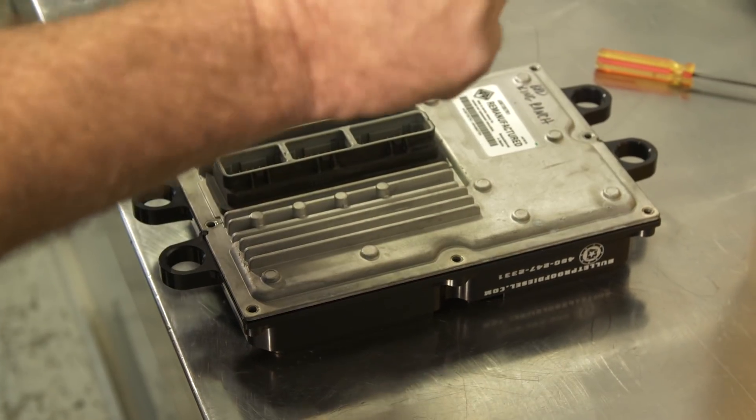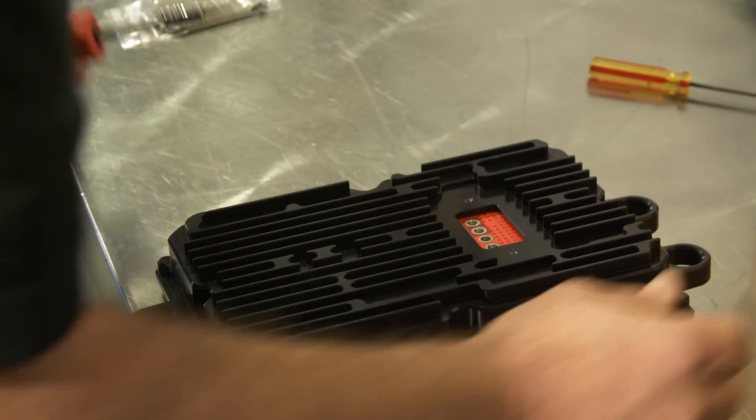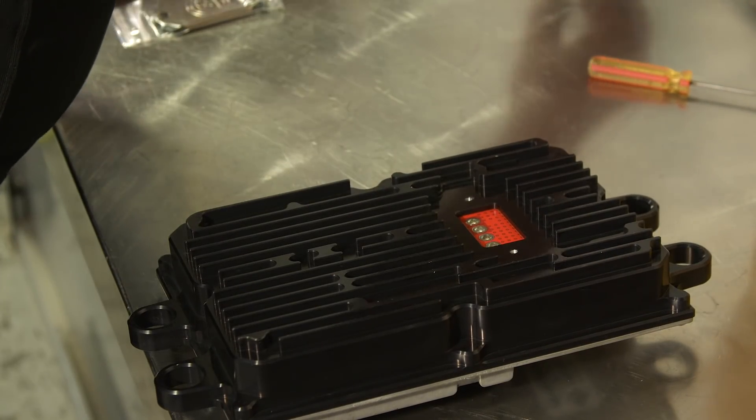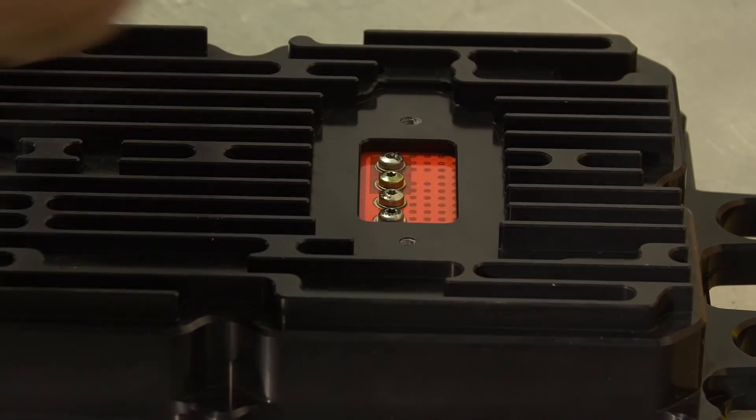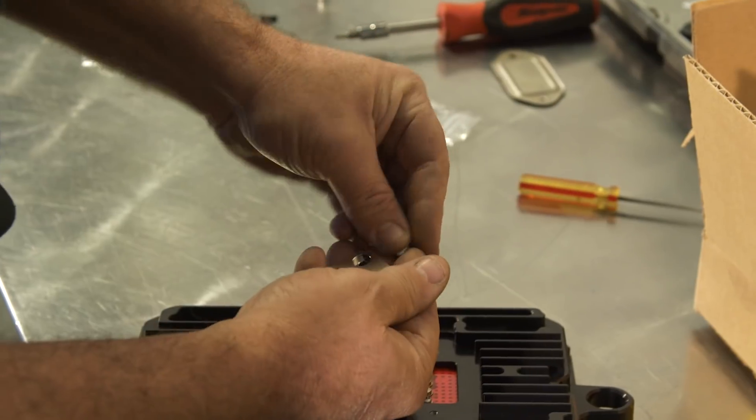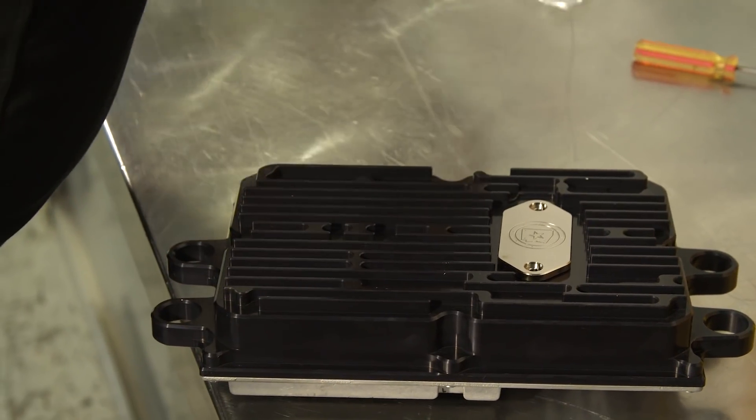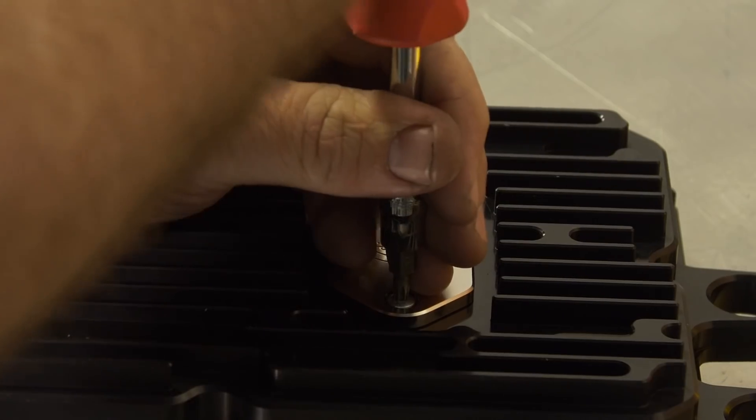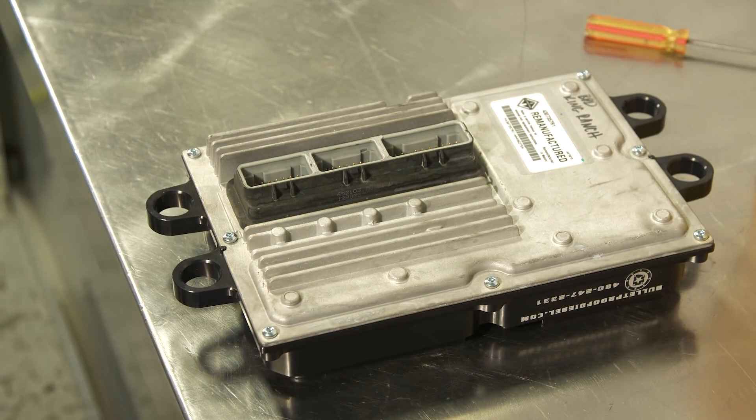Once that's on, you reinstall the eight screws. Once those screws are all in, then we're going to install the T10s on the back. Once those are installed, just the cover, the new bulletproof diesel cover goes on. And again, these are back to T20. Make sure you tighten all of those snug. And voila, ready to go back on the truck.